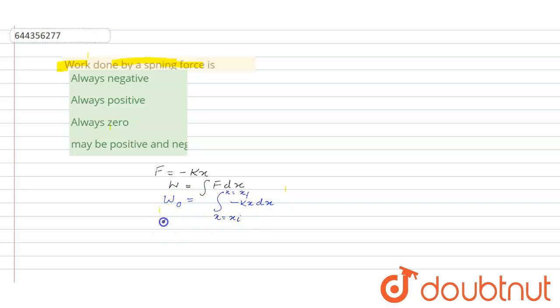So on solving this, W naught is equal to minus kx square upon 2, put the limit xi xf. Now you solve this, when you solve this, you will get W naught is equal to half k xi square minus xf square.